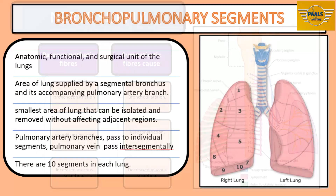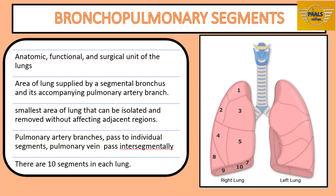A bronchopulmonary segment is defined as the anatomic, functional, and surgical unit of the lungs. It is the area of lung supplied by a segmental bronchus and its accompanying pulmonary artery branch. It is the smallest functional independent region of the lung — the smallest area that can be isolated and removed without affecting adjacent regions. As noted earlier, tributaries of pulmonary veins tend to pass intersegmentally.